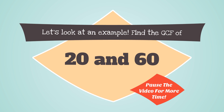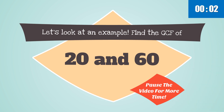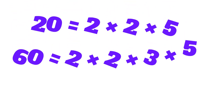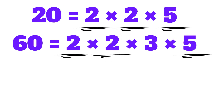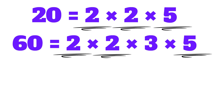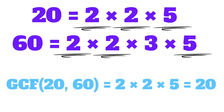Let's look at an example. Find the greatest common factor of 20 and 60. Pause the video for more time on this question. The prime factorization of 20 is 2 × 2 × 5. The prime factorization of 60 is 2 × 2 × 3 × 5. Both numbers have two factors of 2 in common and a factor of 5 in common. Thus, to find their GCF, we multiply these common factors: the GCF of 20 and 60 is 2 × 2 × 5, which gives us 20.